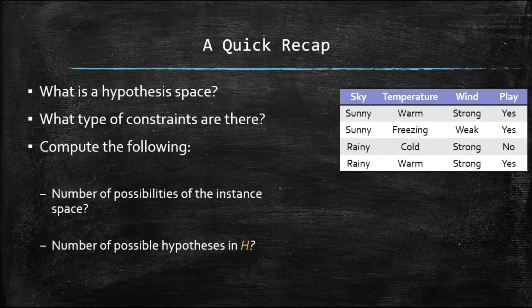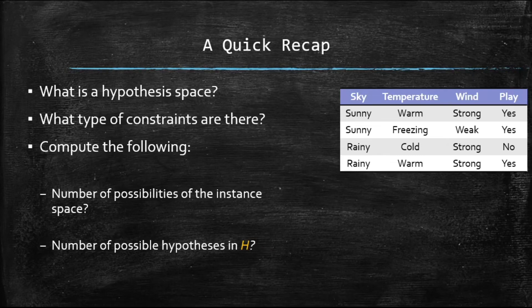A quick recap. Previously we talked about what a hypothesis space is and what type of constraints we've got there. We also answered the following questions about the number of possibilities of the instance space and the number of possible hypotheses in your hypothesis space called H.